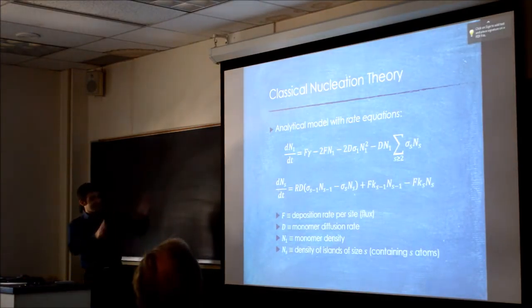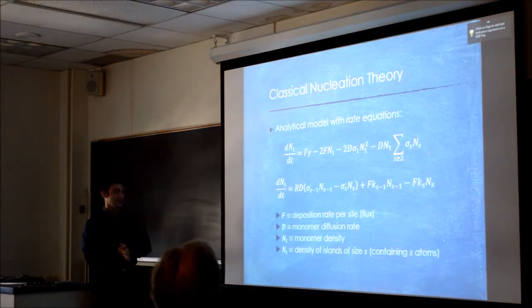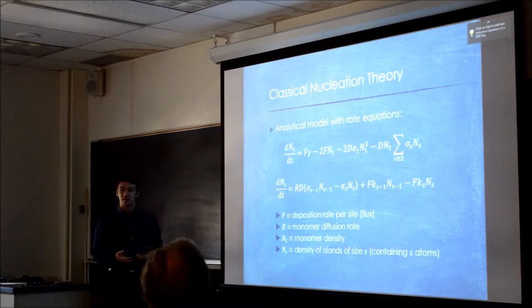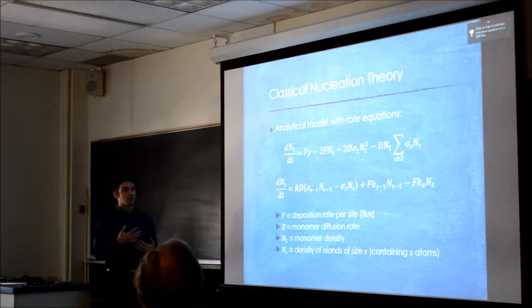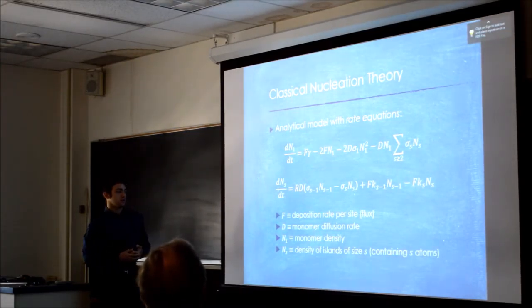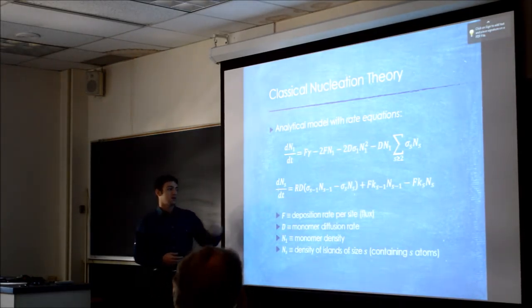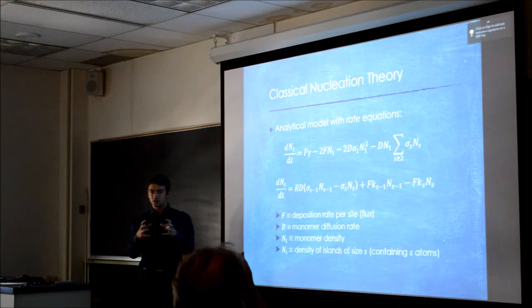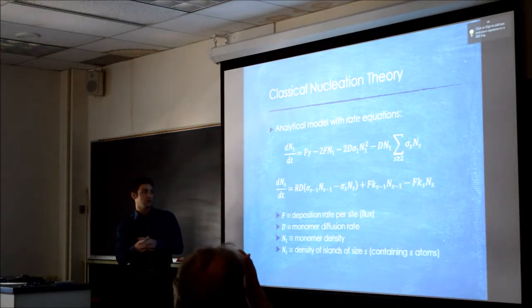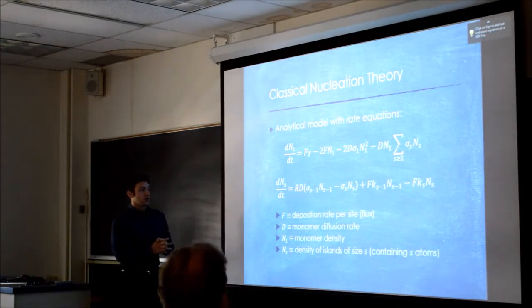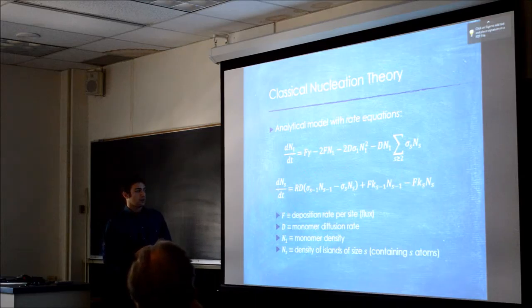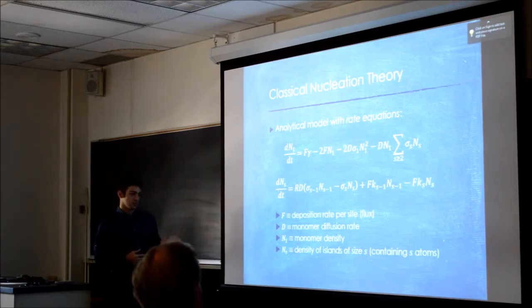This monster—these are called the rate equations. This is analytically how we model the time evolution of the density of monomers, so the density of guys that are diffusing around on the surface, and the density of islands, which are little clusters that stick together and no longer move. These equations are general and they describe the time evolution of these cluster densities and of these monomer densities.